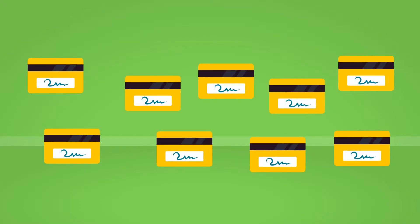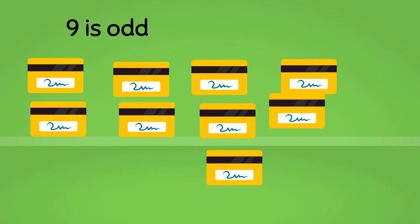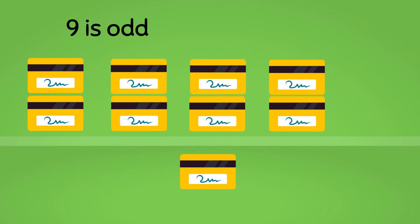Lastly, look at these nine cards. Do you know if it's even or odd? Impressive! Nine is odd because if we pair the cards, one will be left alone.